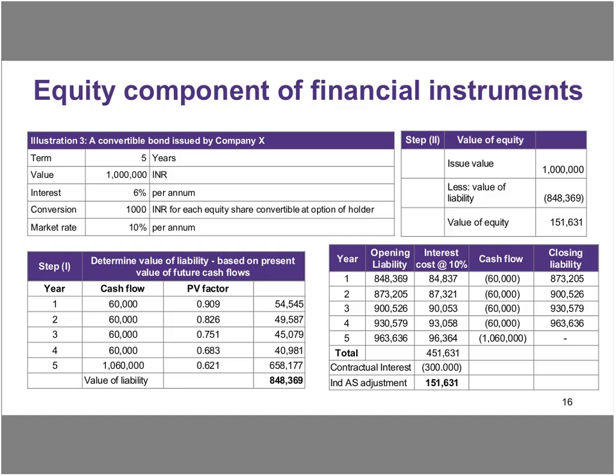From the perspective of MAT, because this is not included in the list of exclusions as on the transition date, the 151,631 which is credited to other equity would be brought within the purview of MAT. Correspondingly, as the company moves forward from the year of convergence, it will accrete interest at the higher rate of 10% in its books. Therefore, its interest cost tantamounts to 451,631, as against the contractual interest cost of 300,000, meaning that the company would debit the P&L more by 151,631, and that amount would be allowed as a deduction going forward.